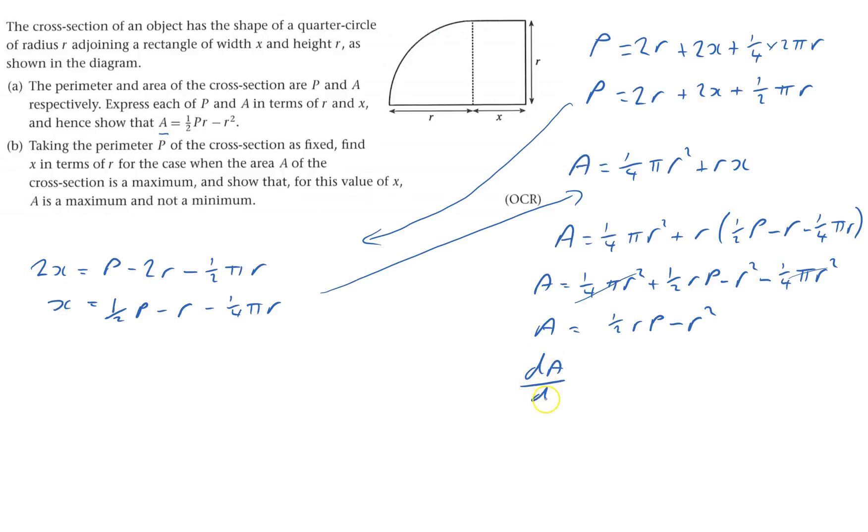So dA by dr is a half P minus 2r. And for stationary points, that will equal zero.